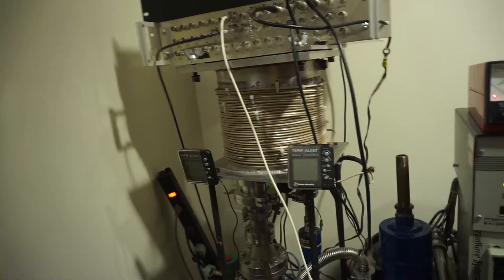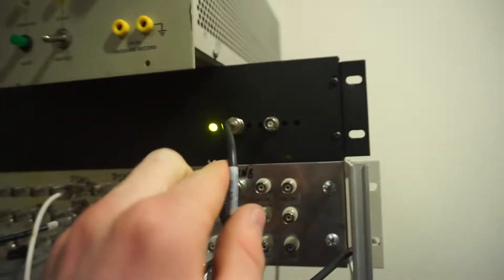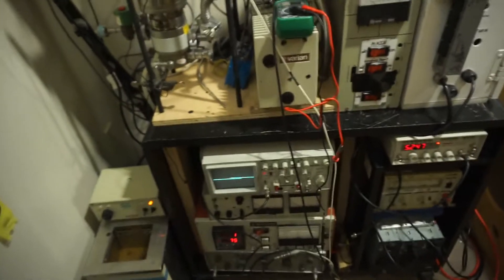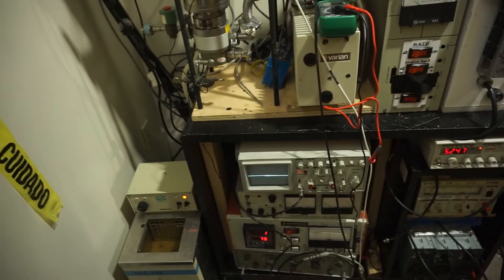So then the signal is detected on the Faraday Cup. It goes through my home-built amplifier. The signal from the amplifier goes down onto the scope, where we can read out the signal on the scope.